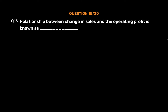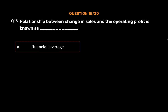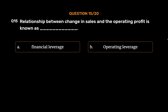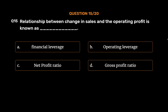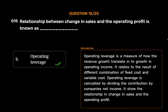Question number 15. The relationship between change in sales and the operating profit is known as: Option A: Financial leverage. Option B: Operating leverage. Option C: Net profit ratio. Option D: Gross profit ratio. The correct answer is Option B: Operating leverage. Operating leverage is a measure of how revenue growth translates into growth in operating income, relating to the result of different combinations of fixed cost and variable cost. It is calculated by dividing the contribution by the company's net income.